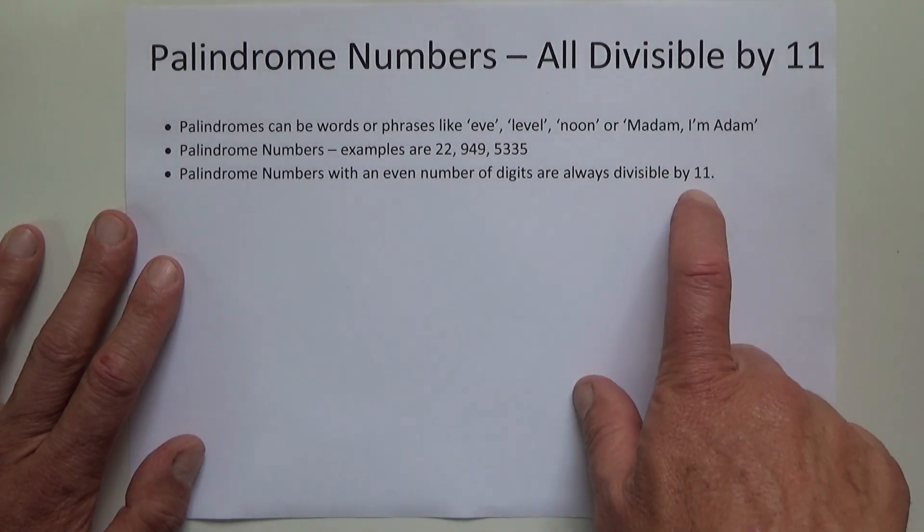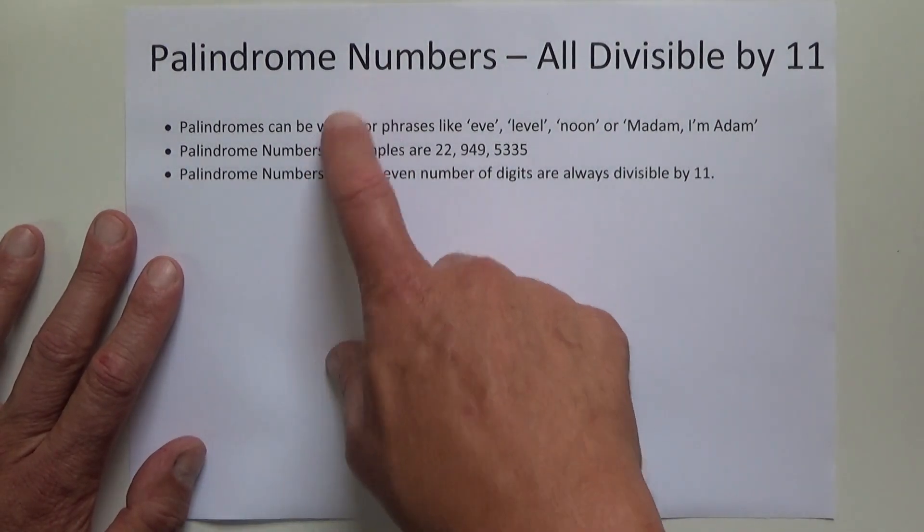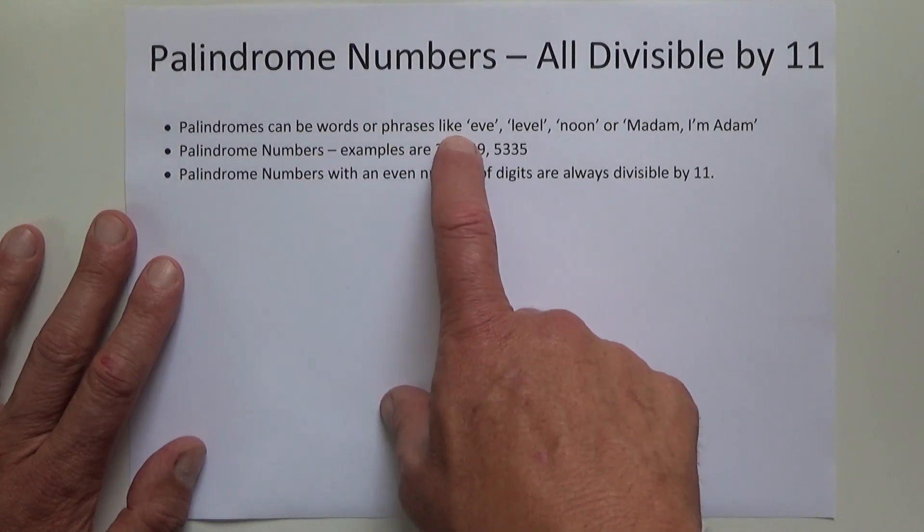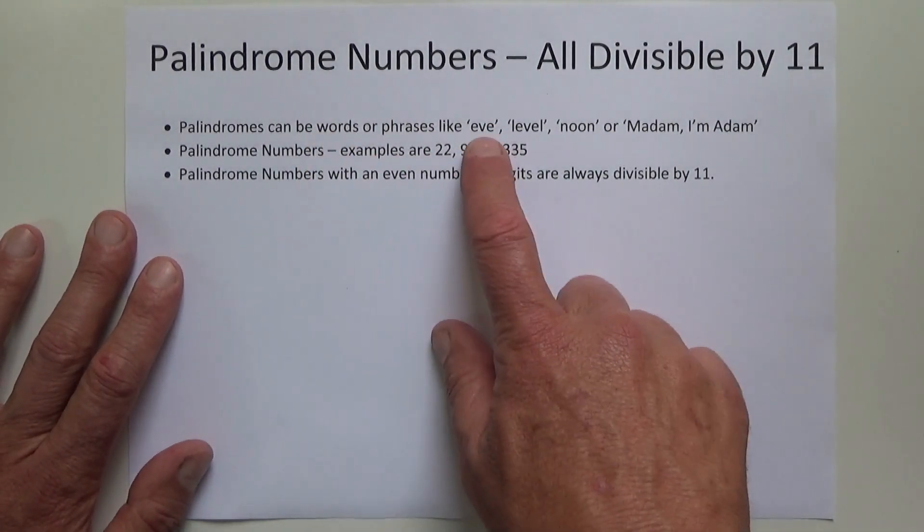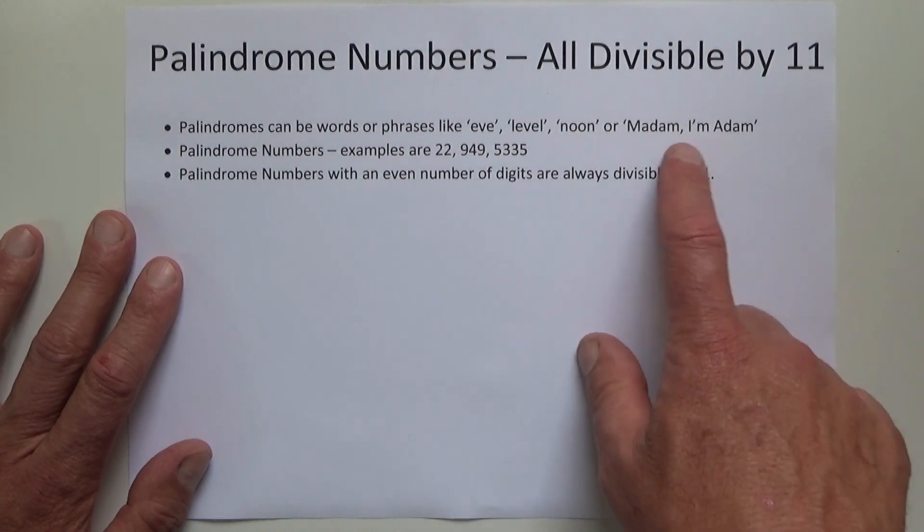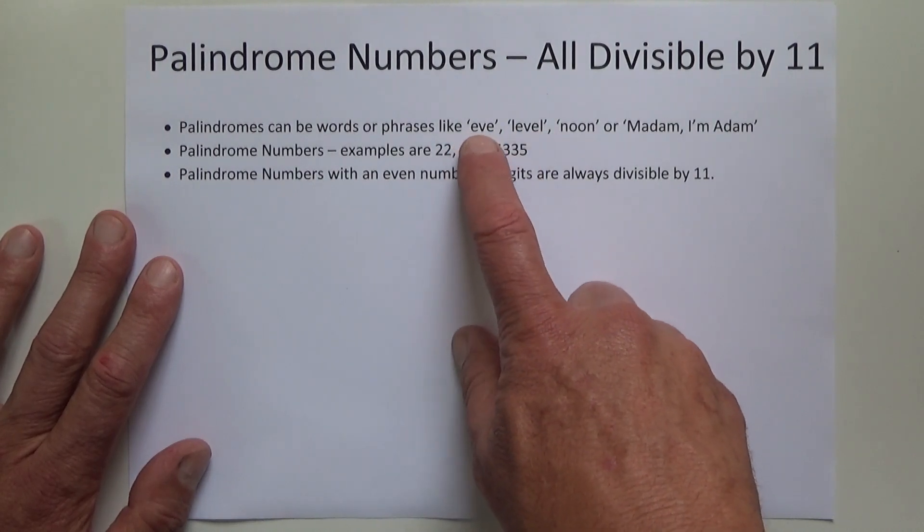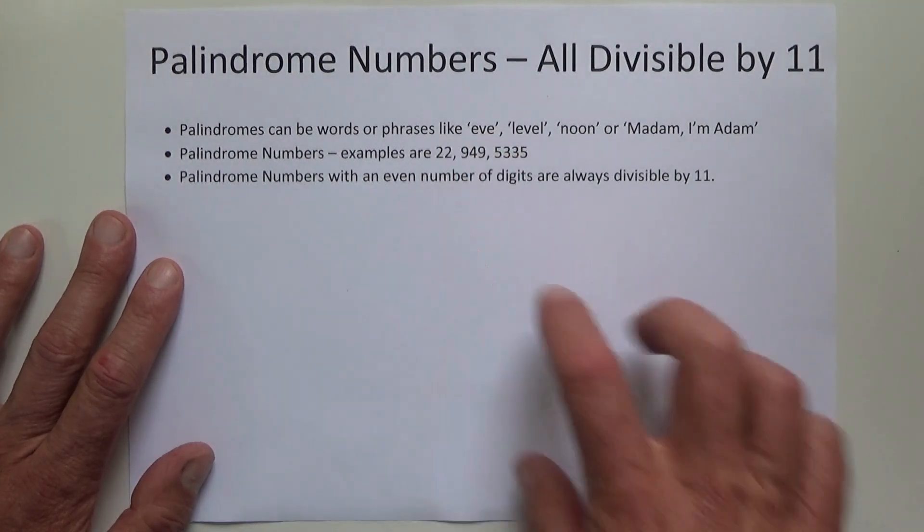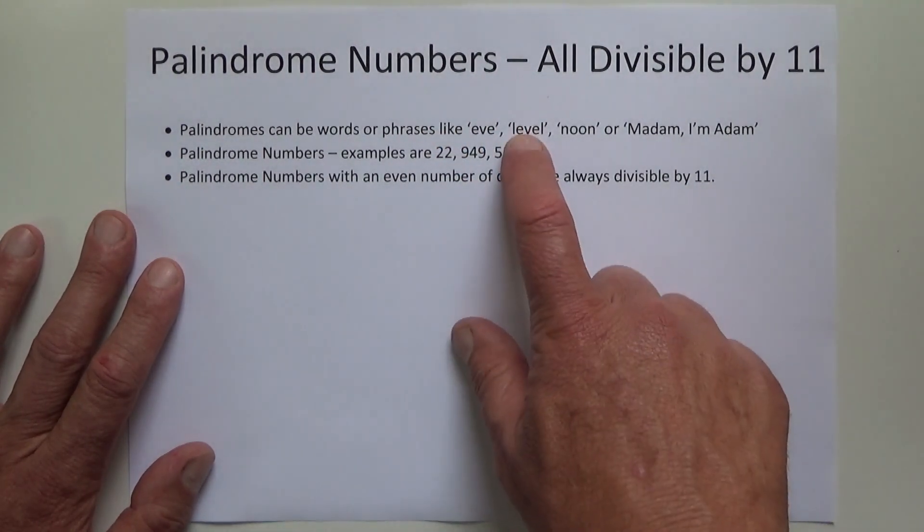To be a palindrome word or palindrome number means that when you read them from left to right, they also read the same from right to left. We can think about words like Eve, level, or noon, and even phrases like madam I'm Adam. If you read left to right and then right to left, it's the same.